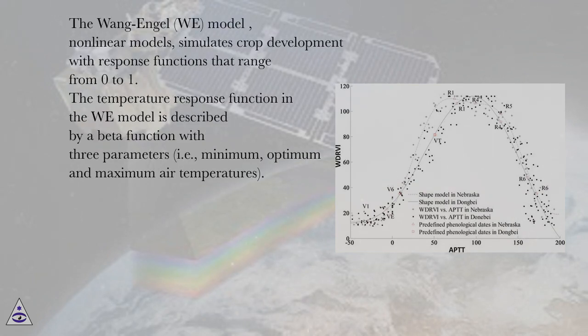The Wang-Engel (WE) model, nonlinear models, simulates crop development with response functions that range from 0 to 1. The temperature response function in the WE model is described by a beta function with three parameters, i.e., minimum, optimum and maximum air temperatures.